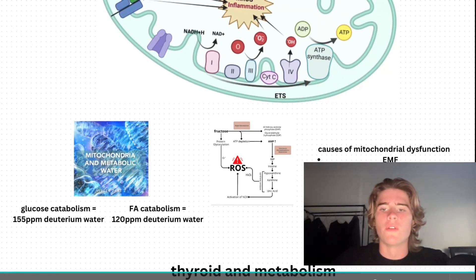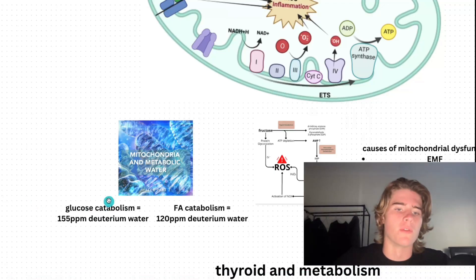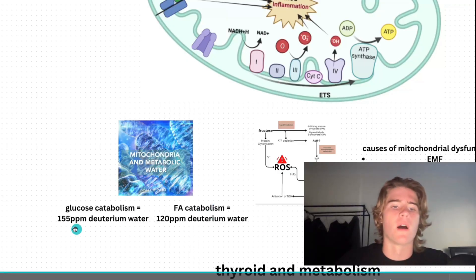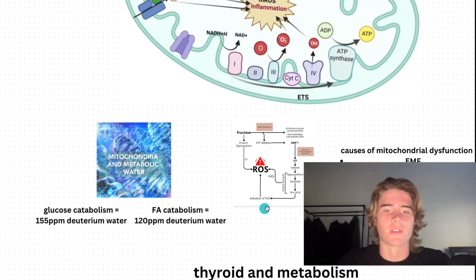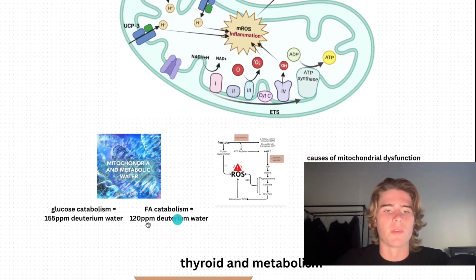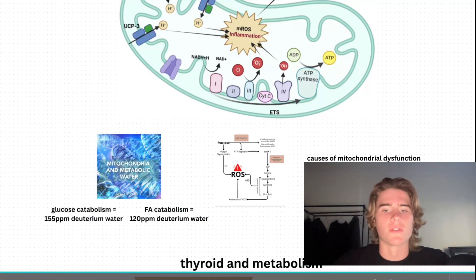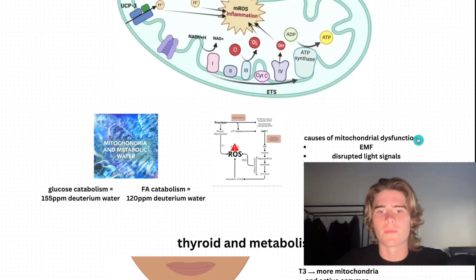When you consume and metabolize carbohydrates, you're going to produce metabolic water at 155 parts per million deuterium, compared to when you metabolize fat, which produces 120 parts per million deuterium. 155 is very high — that's going to slow down the mitochondria because it's a heavy hydrogen compared to the optimal 120 parts per million. Also, when you consume anything with carbohydrates, there's going to be a lot of deuterium in that already.